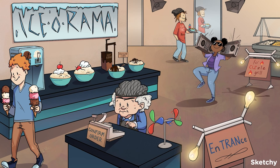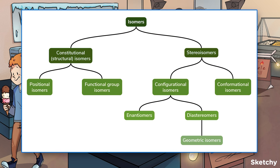And voila! That's all our isomers for today. To recap: isomers have the same formula but differ in connectivities, rotations, or spatial arrangements. Structural isomers are divided into positional and functional group isomers, whereas stereoisomers are divided into configurational isomers and conformational isomers. Plus, within configurational isomers, there are enantiomers, diastereomers, and geometric isomers.